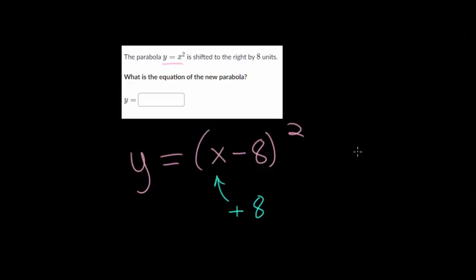You can check this with your graphing calculator or by plotting points to see if your entire function shifted to the right eight units. So the answer is x minus eight, squared. And if we wanted to go left, we would add eight, because negative eight would be the value that makes the expression equal to zero.